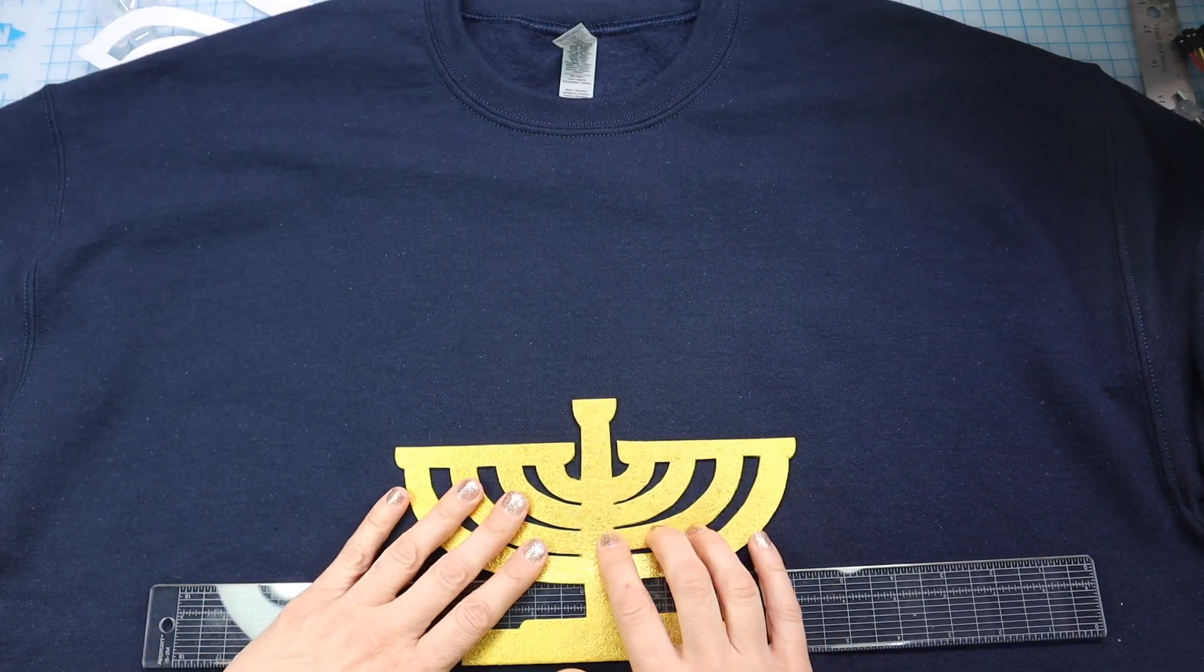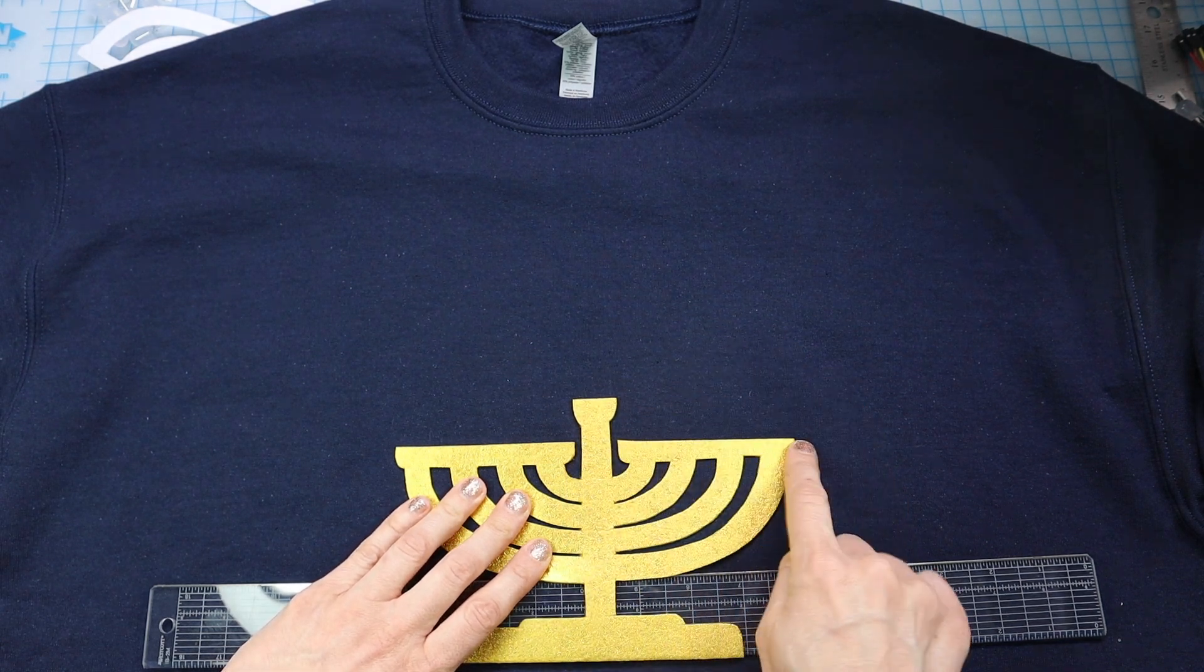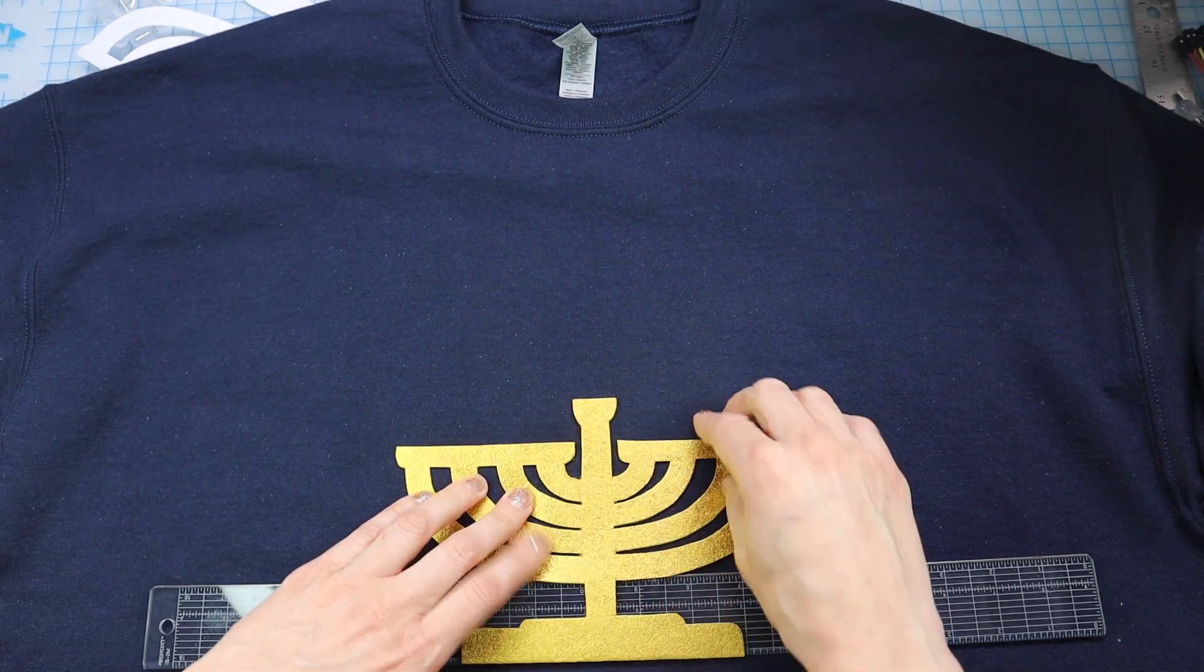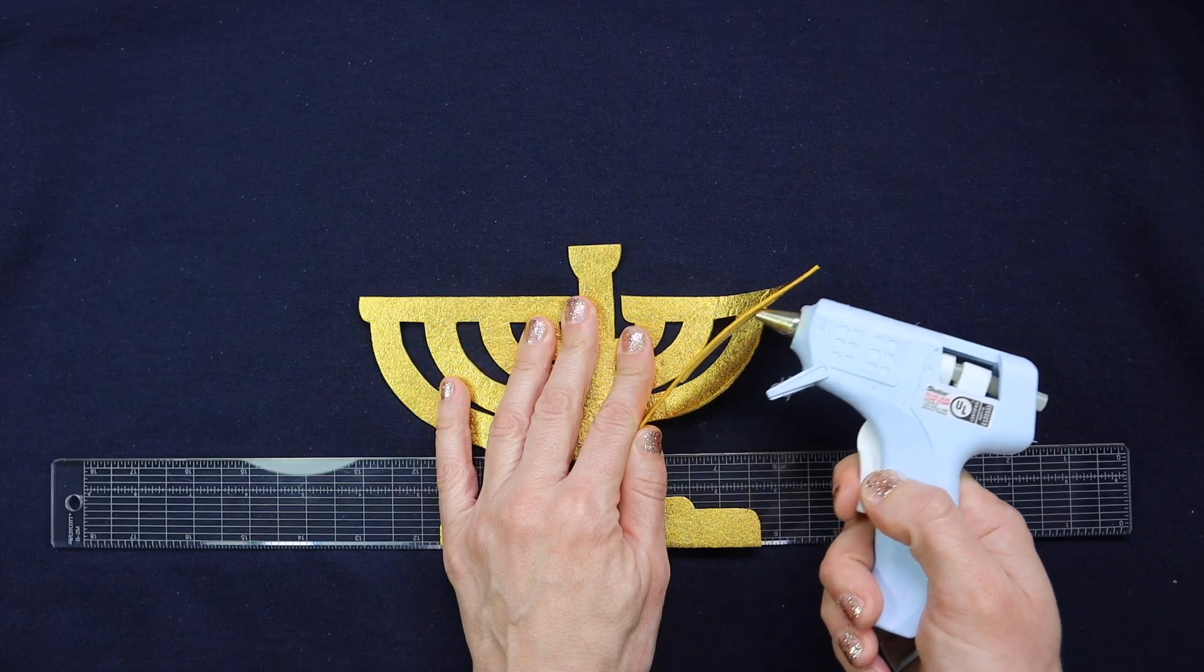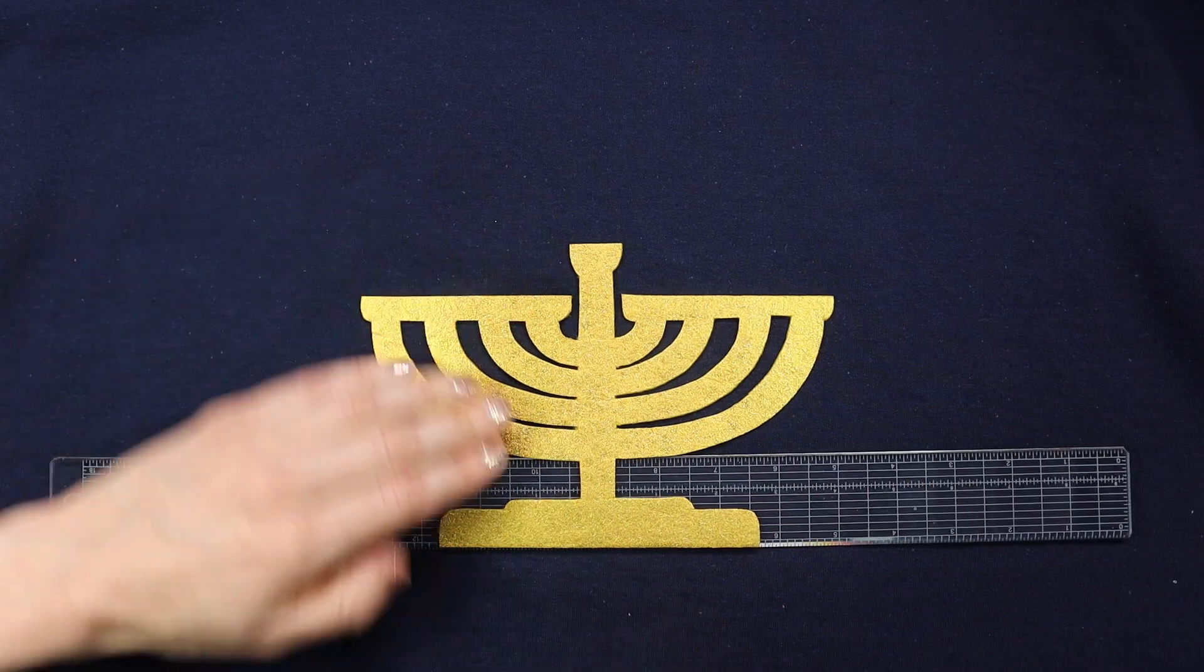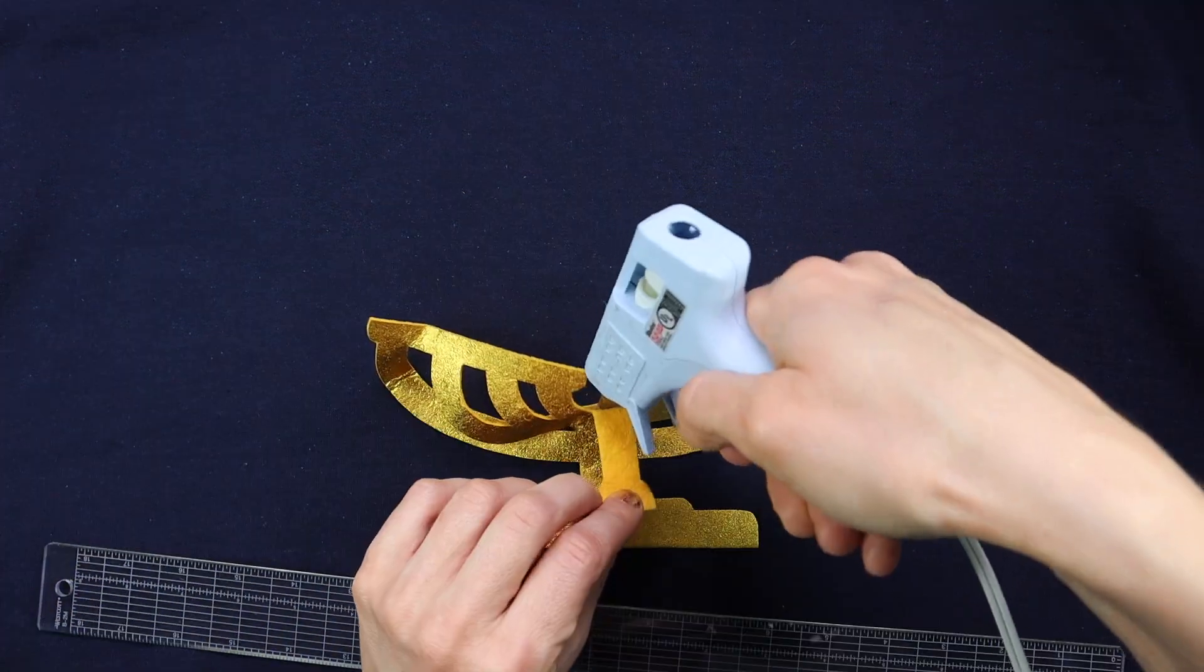And I will hot glue this to the sweatshirt, but I'm not going to put hot glue on this top lip here so that I can put the candles underneath it later. I think hot glue is so easy that it's good to do for something that's only going to be worn once or twice.